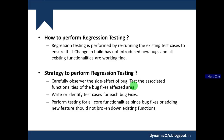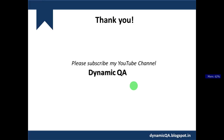There is a strategy to perform regression testing. First, carefully observe the side effects of the bug — if the bug was in the login screen, identify all areas impacted. If test cases are not written for the identified bugs, write them and execute them on the new build. It is also important to verify that all core functionalities are still working and have not been broken by the bug fixes.